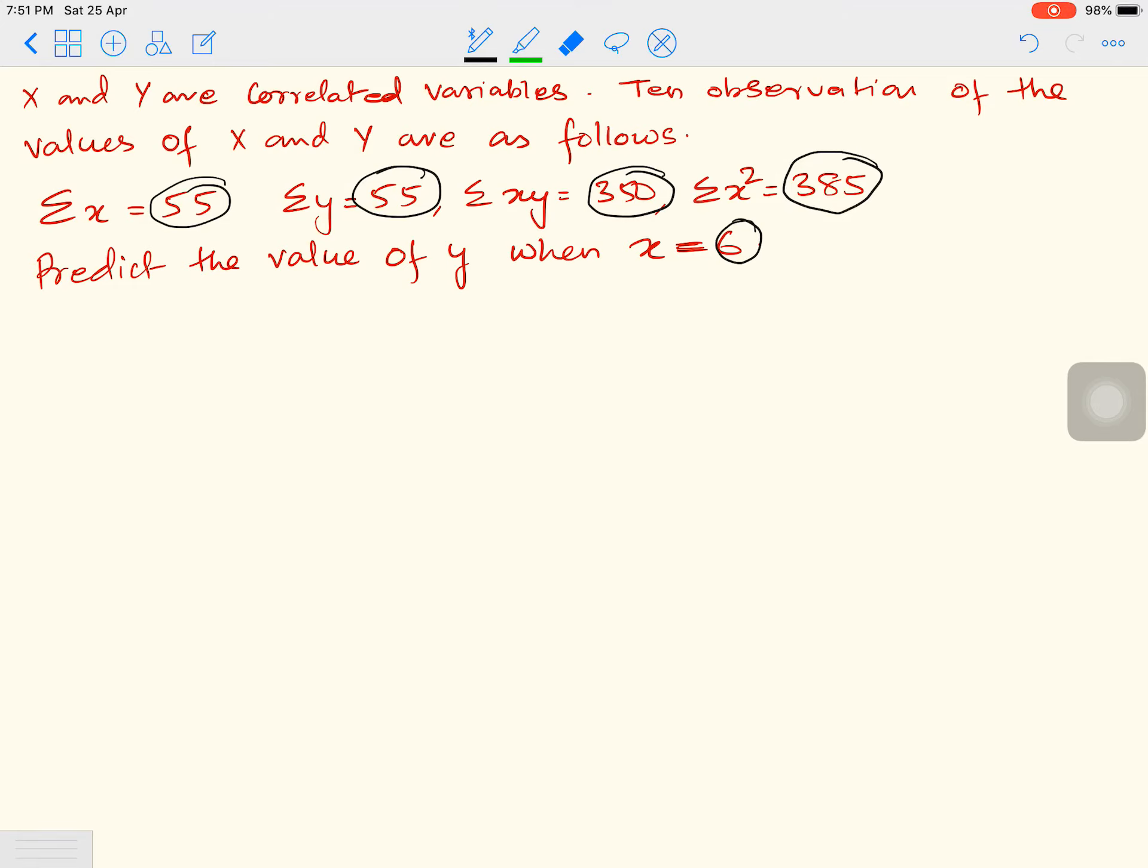So I need Y on X. But looking at the values one more time: Sigma X, Sigma Y, XY and X squared is given. So which formula would be apt?